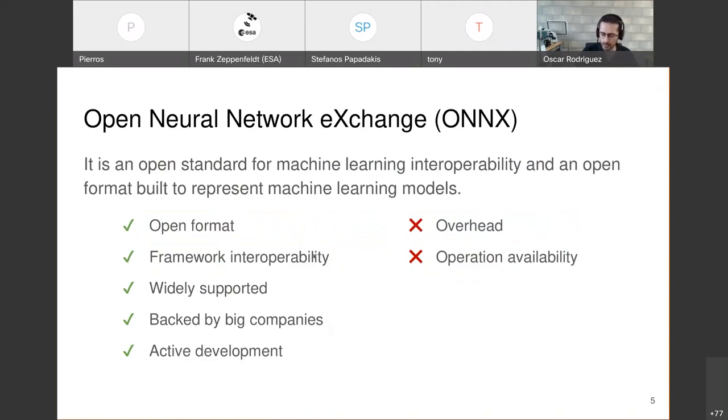But this is not free, which means that you need an extra step to convert your model into this format. There is also another problem that because it's a standardized format between multiple frameworks, not all the operations available in all the frameworks are available in ONNX. You can implement your own operation in some framework, and of course, it won't be available in ONNX because it's a custom operation. So somehow you are limited to the operations supported by ONNX.